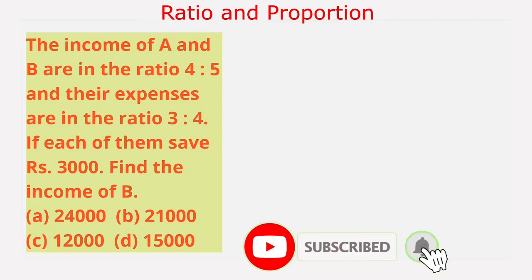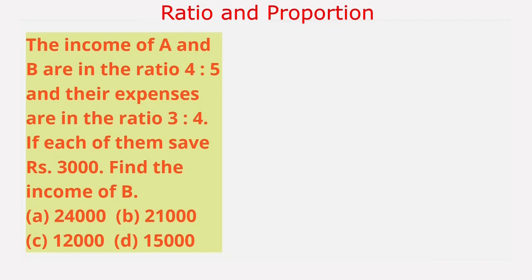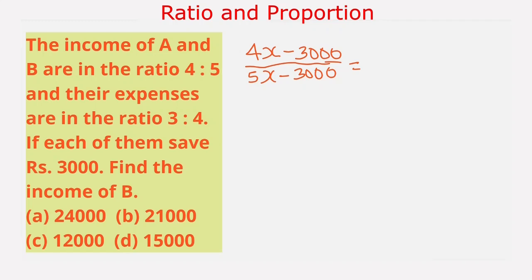Before solving this question, I request you to subscribe to this channel. The concept of income and expenditure is: income minus expenses equals savings, or income minus savings equals expenditure. We use that concept to solve this question. The ratio of income of A and B is 4:5, so we write it as 4x and 5x. Their savings are 3,000, so we subtract 3,000 from the income of both to get the ratio of their expenses, which is given as 3:4, so we write equal to 3 upon 4.